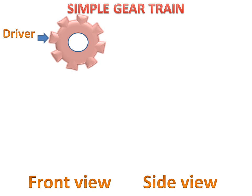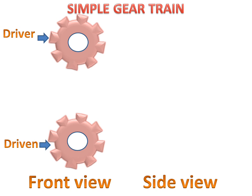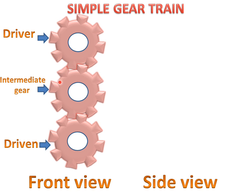We have a driver gear and a driven gear which will be driven by this driver gear. There is space in between the driver and driven gear and it will be filled by the intermediate gear. When this driver gear rotates, it will rotate this gear in the opposite direction, and by this rotating, this will rotate the driven gear in the opposite direction. The direction of driver and driven will be the same because of the intermediate gear.